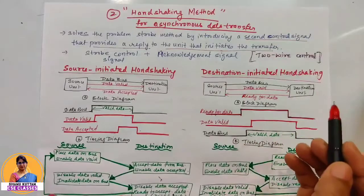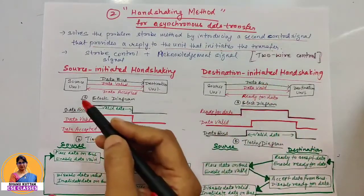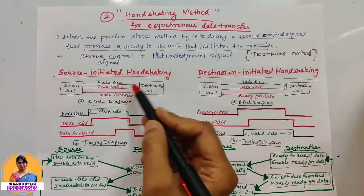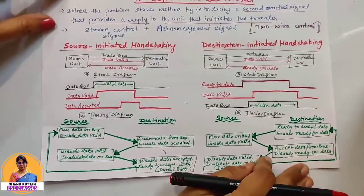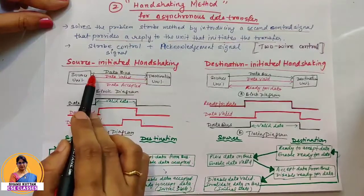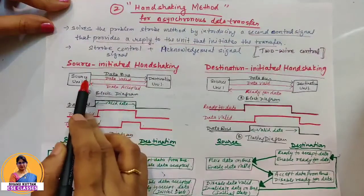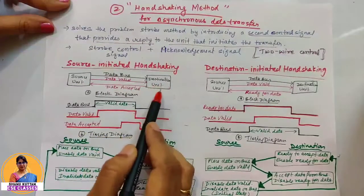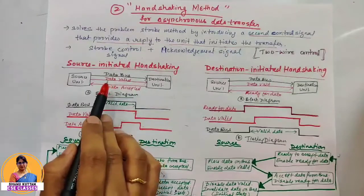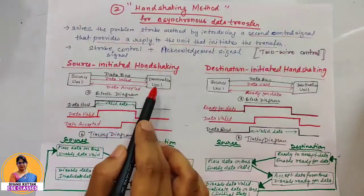The basic principle of the two-way handshaking method is: one control line is used to show that valid data is on the bus, and the other control signal is used to show that the data is accepted. We see this in two ways — source initiated handshaking, when the source initiates, and destination initiated handshaking, when the destination initiates. In source initiated handshaking, the two control lines are: data valid, generated by the source unit, and data accepted, generated by the destination unit.